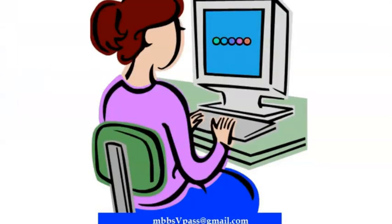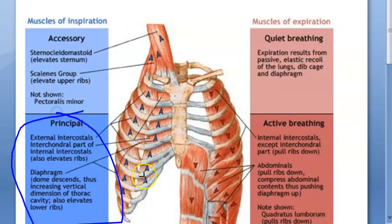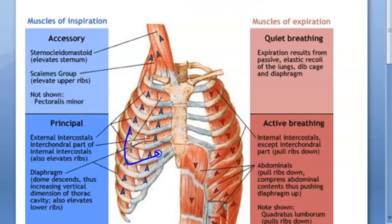In this video, let us look at the muscles of respiration — specifically, the principal muscles for inspiration. In inspiration, your ribs are going up and your diaphragm is going down. The volume of your thoracic cavity must increase, and to achieve this you will be using the external intercostals and the diaphragm.